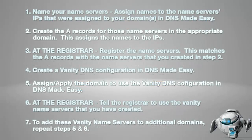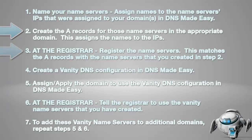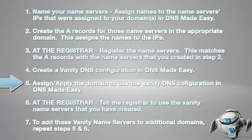Following is a brief overview of the steps involved in this process. First, name your name servers — assign names to the name servers' IPs that were assigned to your domains in DNS Made Easy. Second, create the A records for those name servers in the appropriate domain; this assigns the names to the IPs. Third, at the registrar, register the name servers — this matches the A records with the name servers created in step 2. Fourth, create a vanity DNS configuration in DNS Made Easy. Fifth, assign the domain to use the vanity DNS configuration in DNS Made Easy. Sixth, at the registrar, tell the registrar to use the vanity name servers you have created. To add these vanity name servers to additional domains, repeat steps 5 and 6.